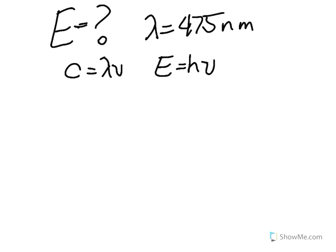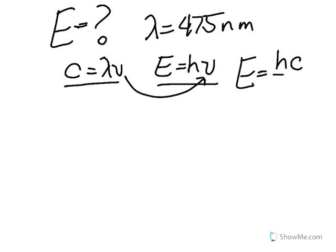First things first, we can combine these two equations into one algebraic expression to equal energy. We can substitute and end up with an equation: E equals H, which is Planck's constant, times the speed of light, which is c, divided by lambda.